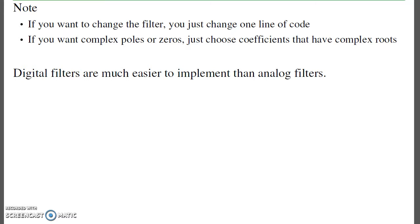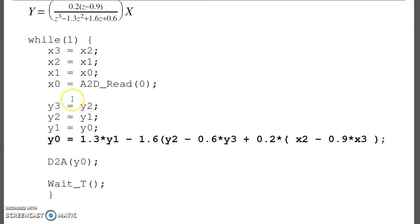Note that if you want to change a digital filter, all you need to do is change one line of code. If you want a filter with complex poles or zeros, it's not a problem. Just change these polynomials to have real or complex roots. I can do complex poles just as easily as real poles. Likewise for zeros.